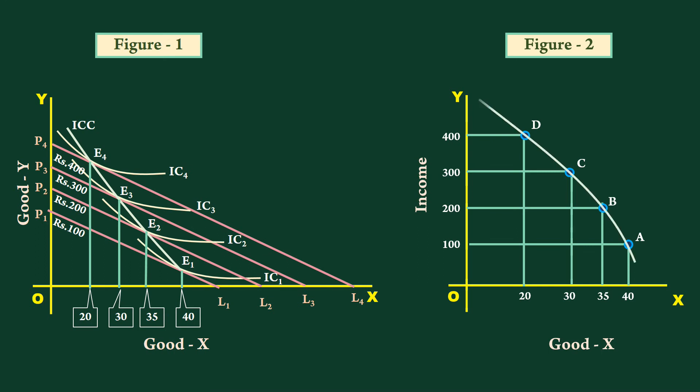Join points A, B, C and D with the help of a smooth curve. The resultant curve is called the Engel curve.